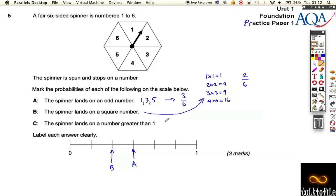The spinner lands on a number greater than 1. A number greater than 1 is 2, 3, 4, 5, and 6. I write them down because it helps me to remember all the numbers, to pick out all the numbers. There's 5 options out of my 6 options, so it's quite likely. 5 out of 6 is going to point to there.